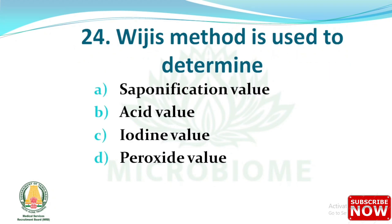Next question: which method is used to determine the degree of unsaturation in oils? Options are: saponification value, acid value, iodine value, peroxide value. The right answer is option C: iodine value.